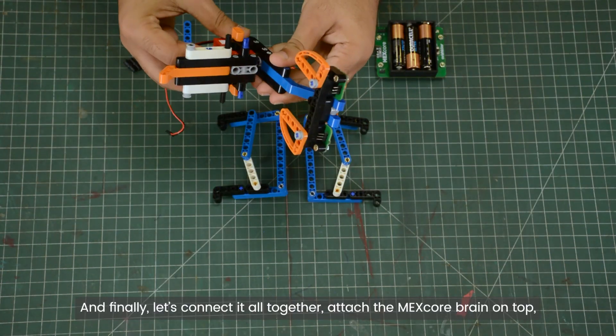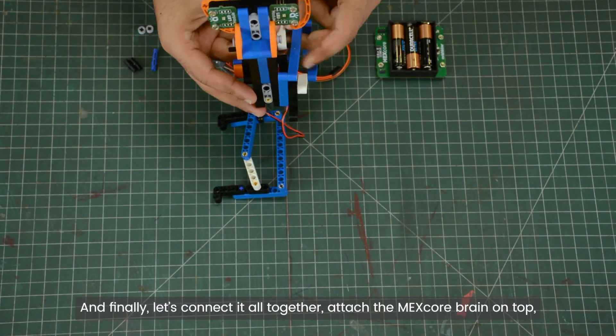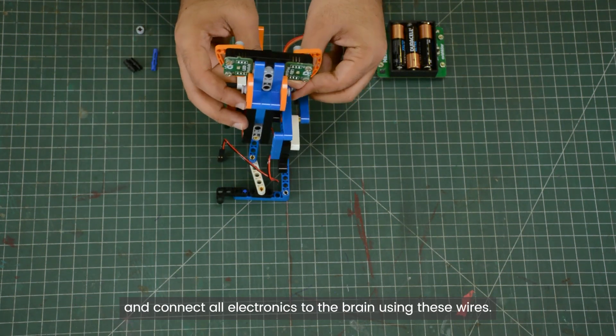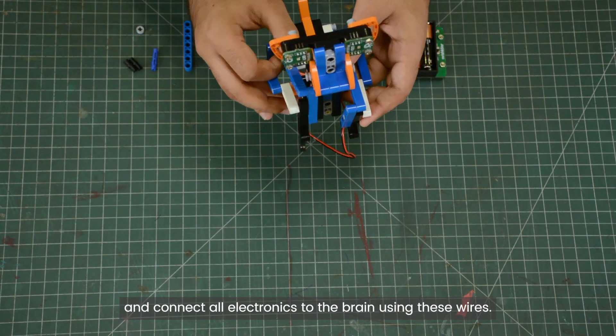And finally, let's connect it all together, attach the MEXcore brain on top and connect all the electronics to the brain using these wires.